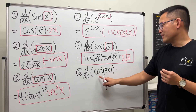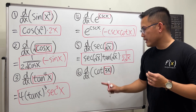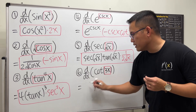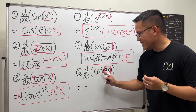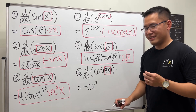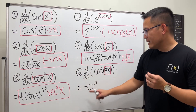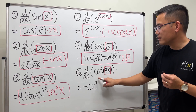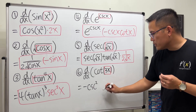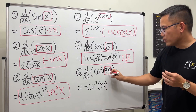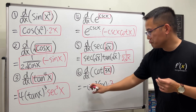Lastly, we differentiate cotangent of 3x. Cotangent is a co-function, so it has a negative derivative. Cotangent and cosecant are best friends, and the derivative of cotangent gives us negative cosecant squared — just like the derivative of tangent is secant squared. The inner function 3x stays, and we multiply by its derivative, which is just 3.